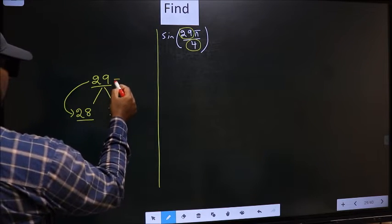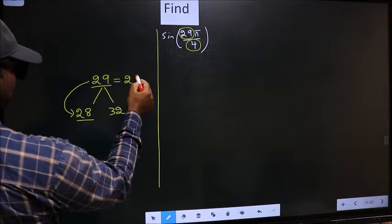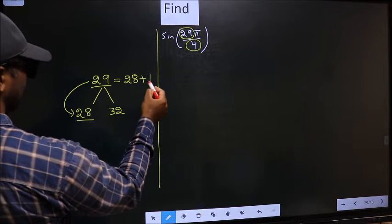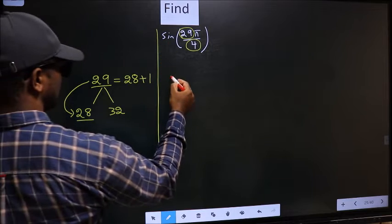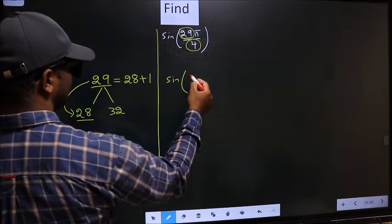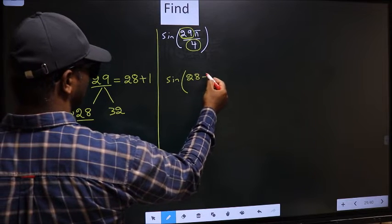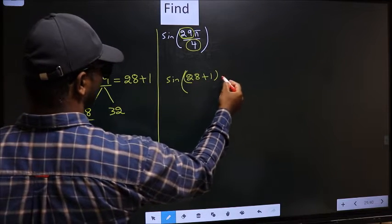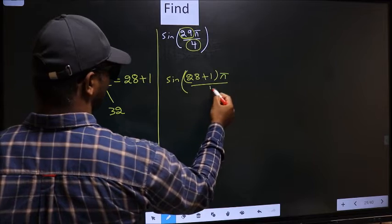So 29 should be written as 28 plus 1. This will change to sine of, in place of 29, we write 28 plus 1, times π/4.